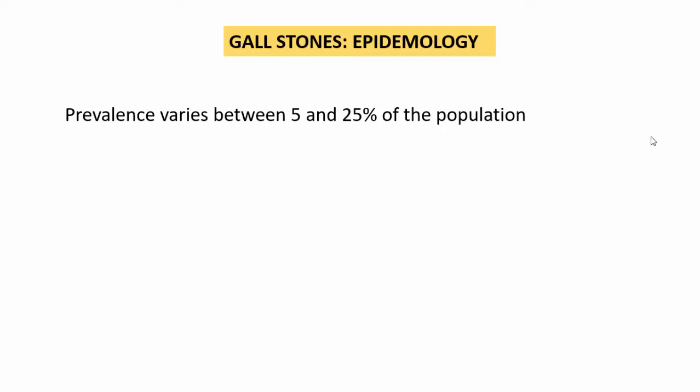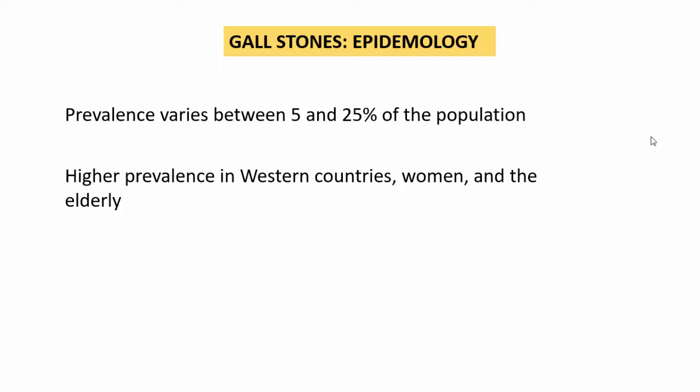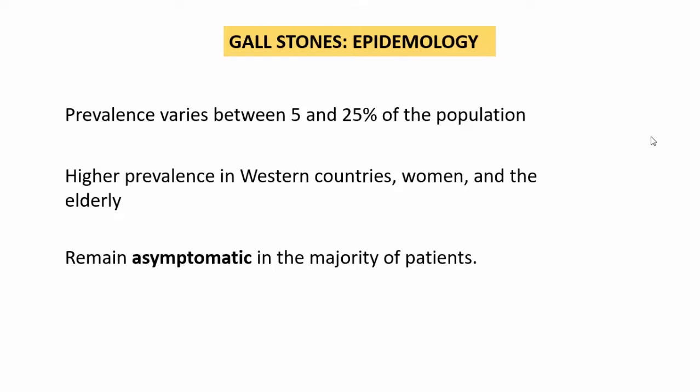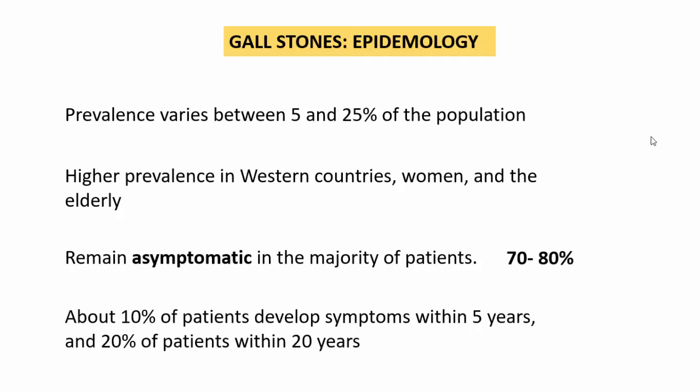Coming to epidemiology, the prevalence of gallstones varies between 5 and 25 percent of the population, making it very common. Higher prevalence is found in western countries. Women are more prone to gallstones, particularly in the elderly age group. Though prevalence is high, 70 to 80 percent of cases remain asymptomatic. Only around 10 percent of patients develop symptoms within five years, and around 20 percent within 20 years.